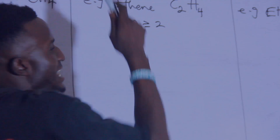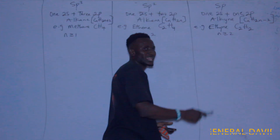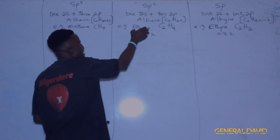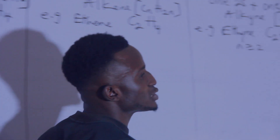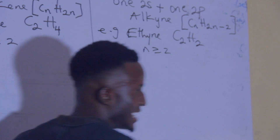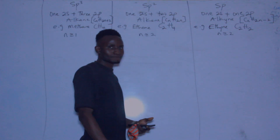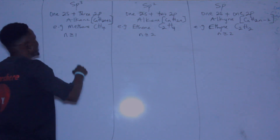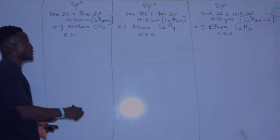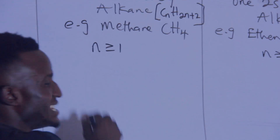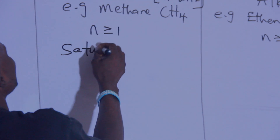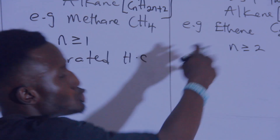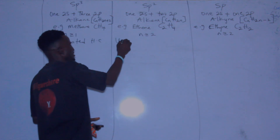The alkyne family starts from ethyne and the alkene family starts from ethene. The sp³ hybridization, which is the alkane family, is known as saturated hydrocarbon, while the alkene and alkyne families are unsaturated hydrocarbons.